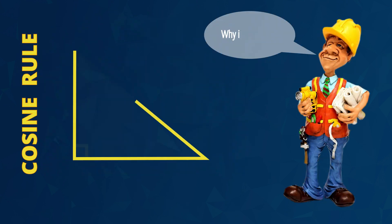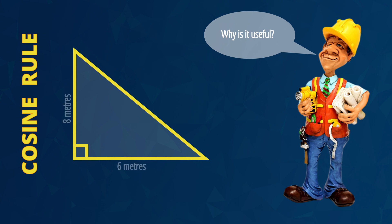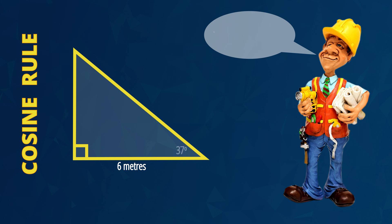So why is the cosine rule useful? Well, the cosine of an angle is a mathematical operation that is the ratio of two sides of a right angle triangle. That means that in any right angle triangle you only need to know two measurements, like the lengths of two sides or one angle and one side, and then if you use the rule you can work out all of the sides and all of the angles in the triangle.